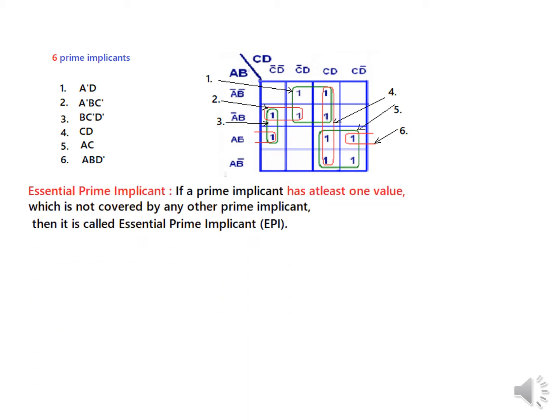Now we come to another term called essential prime implicants. An essential prime implicant is one where at least one value in the prime implicant is not covered by any other prime implicant. Starting from here: this one is only covered by this prime implicant, not covered by any other. So prime implicant number one, a-dash d, will be called an essential prime implicant.